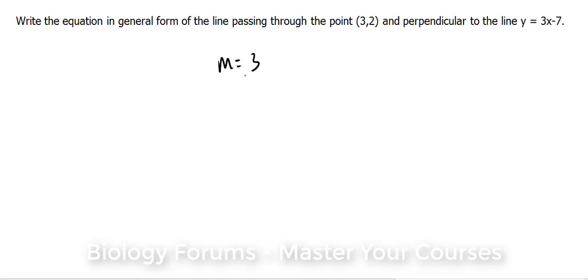Now the relationship between perpendicular lines is that if this line has a slope of 3, then if we were to find a line that's perpendicular to it, it would have the reciprocal, the negative reciprocal of that.